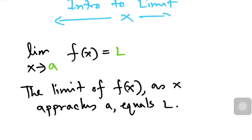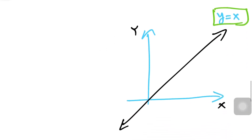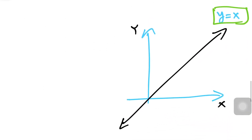The limit definition says: the limit of f(x) as x approaches a equals some value we're going to call L. So the question is, what does that mean?